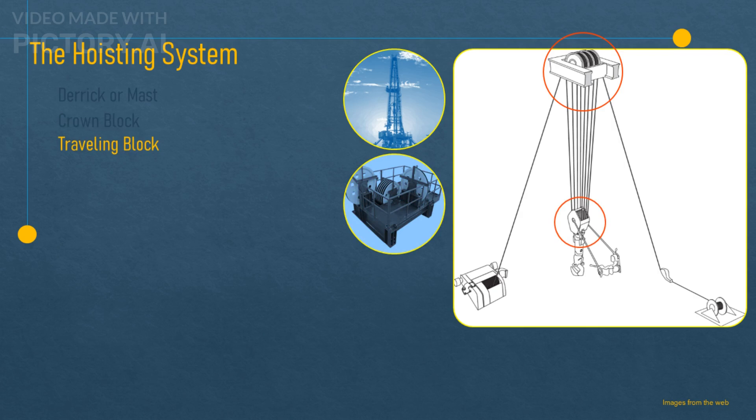The traveling block. This is another set of pulleys or sheaves that moves up and down along the derrick. The traveling block supports the hook, which connects to the swivel and the drill string.